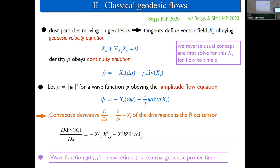Taking a quantum mechanical point of view, we let ρ be the modulus-squared of some wave function ψ, and then what corresponds to the density flow is the amplitude flow equation — the quantum mechanical version of geodesic evolution, given that you already know the tangent vectors.